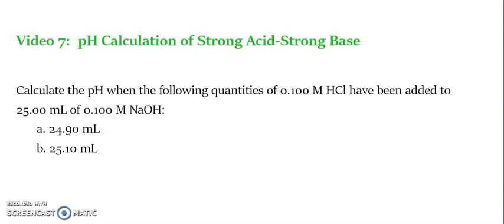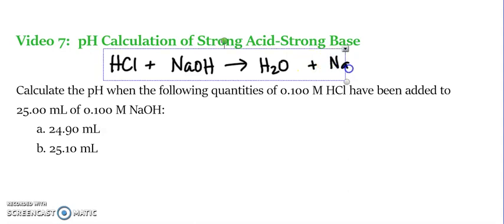The problem says calculate the pH when the following quantities of 0.100 molar HCl have been added to 25 milliliters of 0.100 molar NaOH. So we've got two different amounts of HCl, but first what we have to understand is what's our equation. So HCl plus NaOH will give us water and our salt will be NaCl. So the reason we need this is that we can see that our ratio is 1 to 1 for our HCl and our NaOH. So we know our equivalence point will be when we have equal numbers of moles.